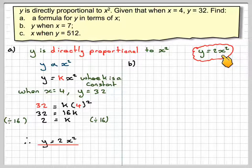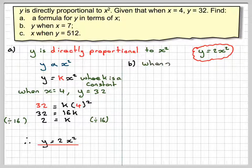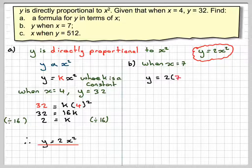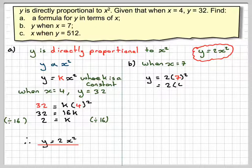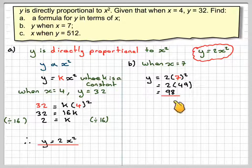Our formula is Y is equal to 2X squared, so when X is equal to 7, Y will be equal to 2 times 7 squared, which is 2 times 49, which is 98.